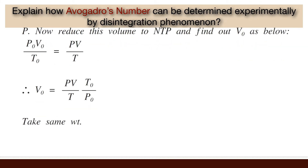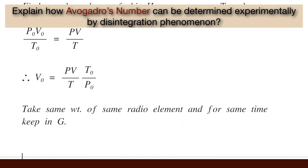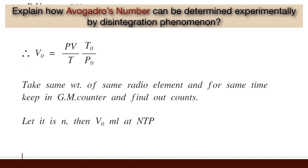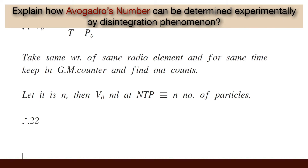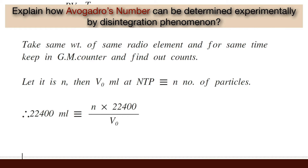Now take the same weight of the same radio element and for the same time keep it in a GM counter and find out the count. Let it be N. Then V₀ mL at NTP is equivalent to N number of particles. Therefore, 22400 mL of helium gas will correspond to N × 22400 / V₀, which is again Avogadro's number.